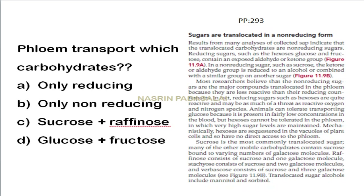Next, phloem transport: which carbohydrates are transported? Most commonly, sugars are translocated in non-reducing form — found on page 293, sixth edition. Non-reducing sugars transported include sucrose, raffinose (sucrose plus one galactose), stachyose (sucrose plus two galactose), and verbascose (sucrose plus three galactose molecules).